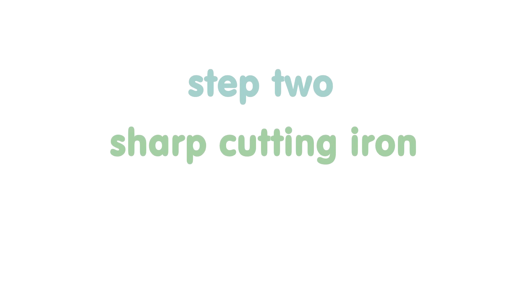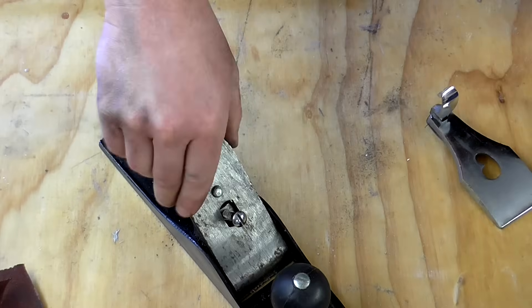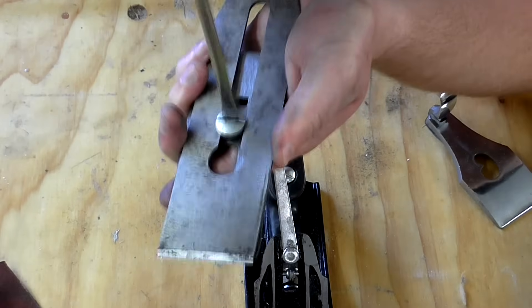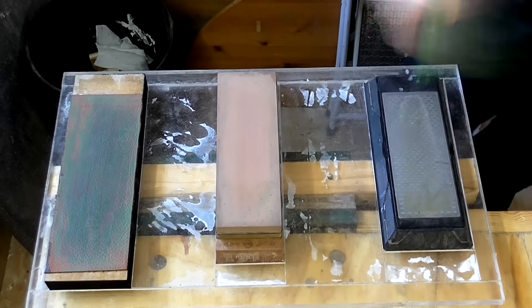Sharp cutting iron. A sharp cutting edge will make the hand plane cut cleaner and be easier to use as there'll be less resistance. My method for sharpening is to first flatten and polish the very tip of the back of the cutting iron from edge to edge.